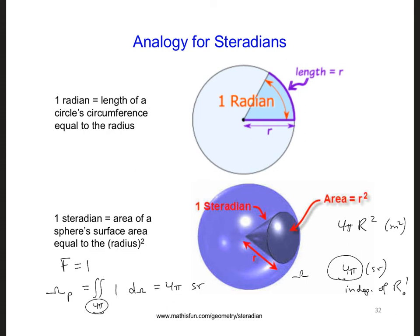Meanwhile, the beam pattern solid angle for a short dipole, if we were to calculate this, it would be 8.4 steradians, so a bit better than this 12.57 steradians for an isotropic antenna.